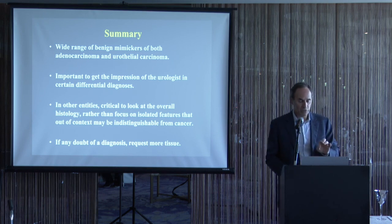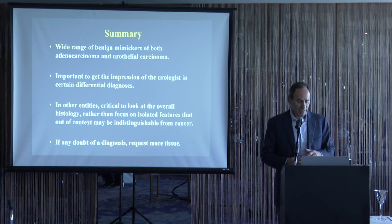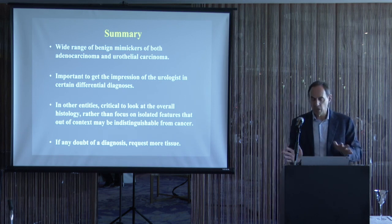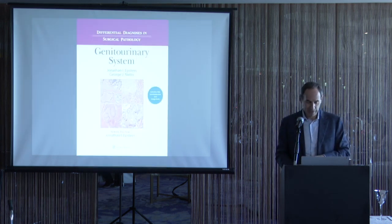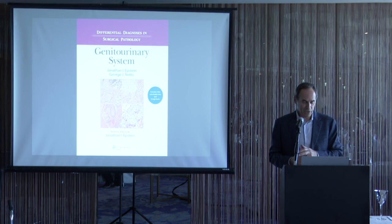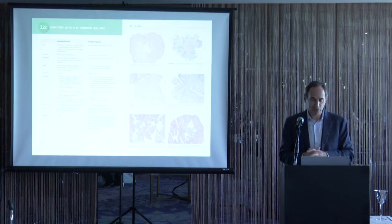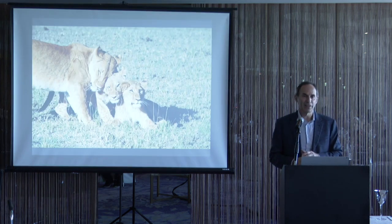To summarize: this lecture covered a wide range of benign mimickers of both adenocarcinoma and urothelial cancer. It's important to get the clinical impression from urologists in certain differential diagnoses, to look at overall histology rather than isolated features that out of context may be indistinguishable from cancer, and to request more tissue when in doubt on small specimens. A recommended resource is the Differential Diagnoses in Urological Pathology book.